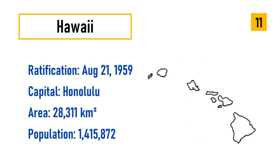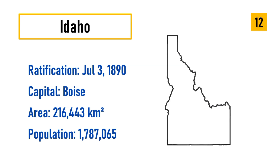Number 11: Hawaii, ratification August 21, 1959, capital Honolulu, area 28,311 square kilometers, population 1,415,872. Number 12: Idaho, ratification July 3, 1890, capital Boise, area 216,443 square kilometers, population 1,787,065.